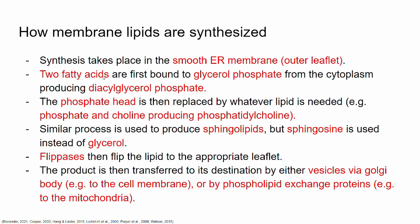The synthesis takes place in the smooth endoplasmic reticulum — specifically the outer leaflet of the smooth ER membrane. If you remember from my previous video, the rough endoplasmic reticulum is responsible for the production of some proteins through a process called co-translational translocation. In the case of lipid synthesis, the smooth endoplasmic reticulum is the organelle responsible. So: proteins → rough ER; lipids → smooth ER.